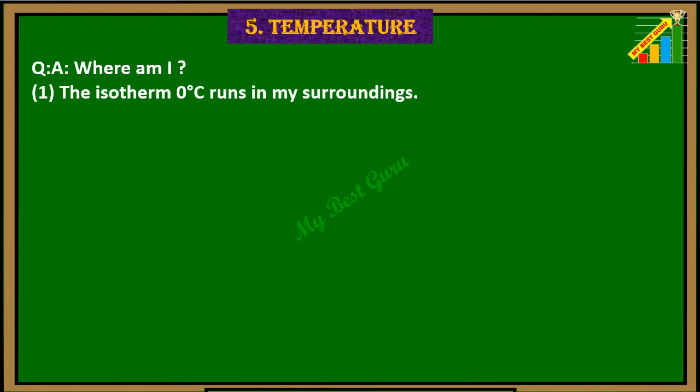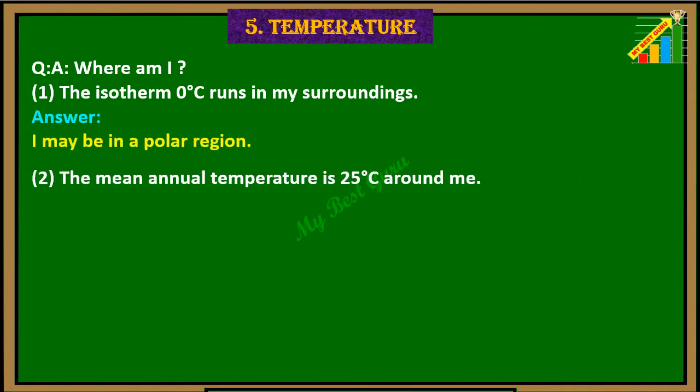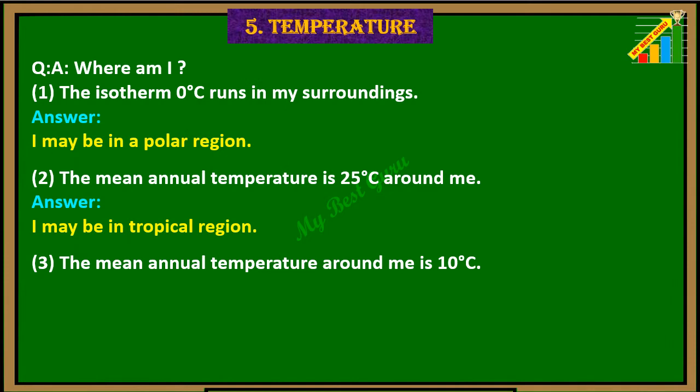Where am I? 1. The isotherm 0 degree Celsius runs in my surroundings. Answer: I may be in a polar region. 2. The mean annual temperature is 25 degree Celsius around me. Answer: I may be in a tropical region.